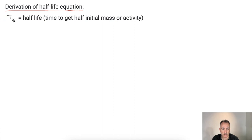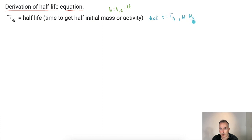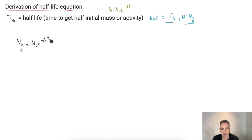Let's derive the half-life equation. We start with N equals N₀ e to the minus lambda t. At t equals t one-half, we know the amount remaining is exactly half what we started with: N equals N₀ over two. Substituting those in: N₀ over two equals N₀ e to the minus lambda t one-half. We can cancel the N₀ terms, leaving one-half equals e to the minus lambda t one-half.